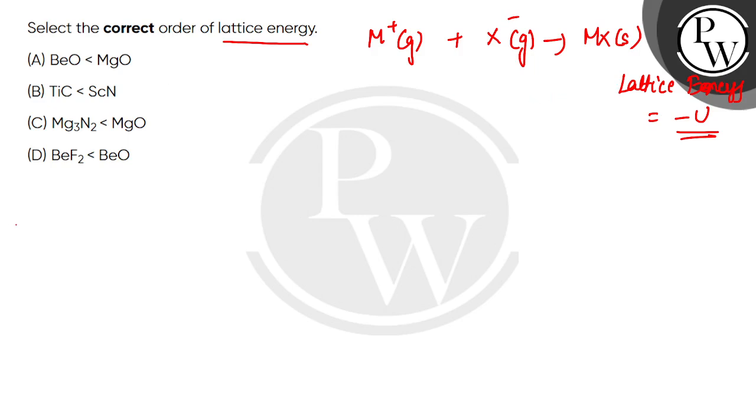Option A compares beryllium oxide and magnesium oxide. Oxide is common, so the difference is between Be^2+ and Mg^2+. Both are in the same group. Going down the group, the size increases as the number of shells increases, overpowering the effective nuclear charge. So magnesium is larger and beryllium is smaller.